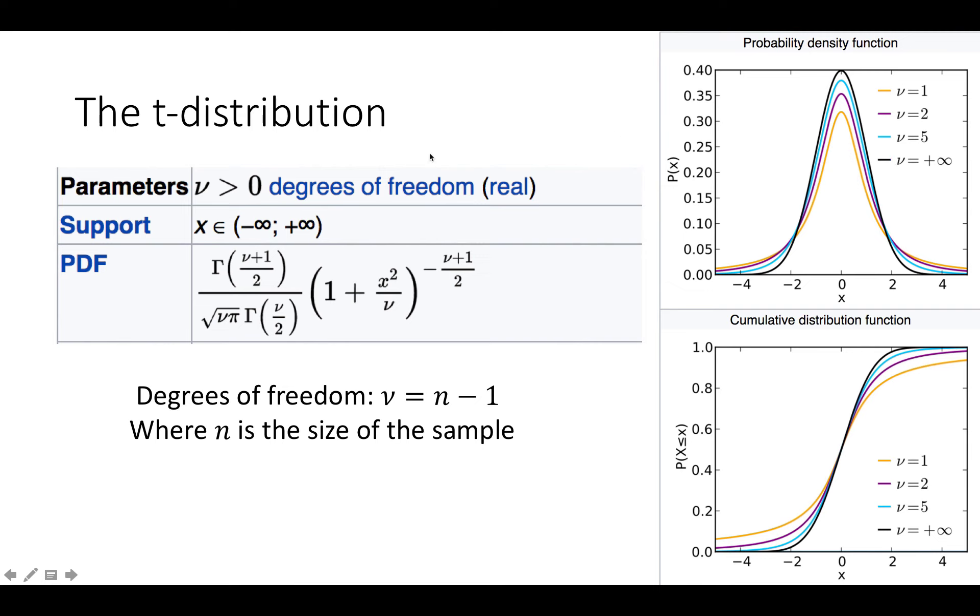So nu is the number of degrees of freedom, it's basically one less than the size of the sample. So if the size of the sample is large enough, here nu is equal to infinity, then basically we get a perfect estimate of the variance and therefore what we get is basically just the z-test.